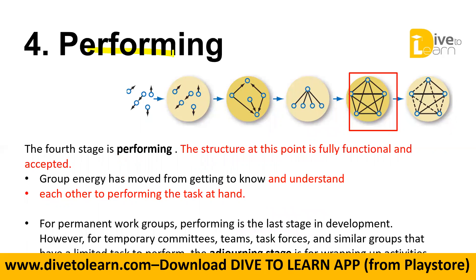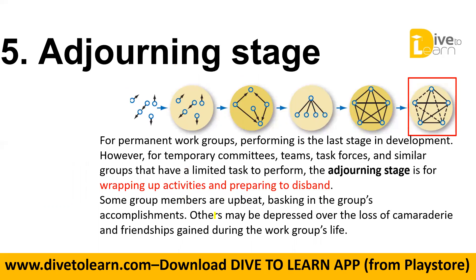The performing stage is the fourth stage. At this point, the structure is fully functional and accepted. Group energy has moved from getting to know and understand each other to permanently developing the purpose for which the group was formed. The task is performed in the performing stage. The last stage is adjourning. For temporary committees, task teams, and task forces with limited tasks, the adjourning stage is basically wrapping up activities and preparing to disband.